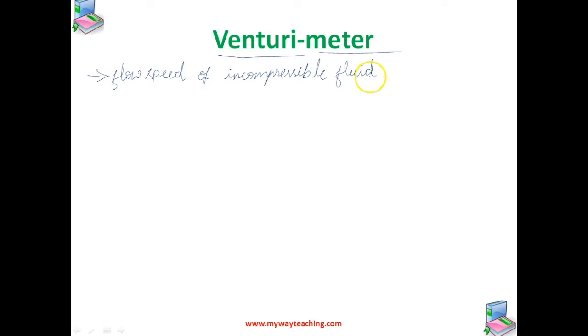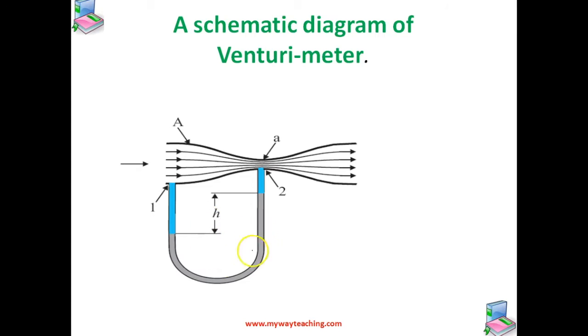It consists of a tube with a broad diameter and a small constriction at the middle. A manometer in the form of a U-tube is attached to it with one arm at the broad neck point of the tube and the other at the constriction.